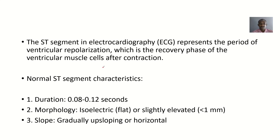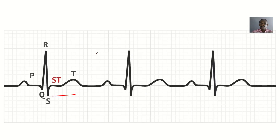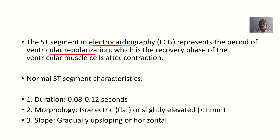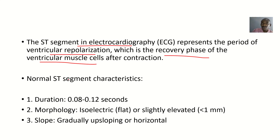The ST segment in electrocardiography represents a period of ventricular repolarization. The QRS complex represents ventricular depolarization, and after depolarization, repolarization sets in — that period is represented by the ST segment. Repolarization is essentially the recovery phase of the ventricular muscle cells after contraction, and that small period of relaxation is what the ST segment shows.